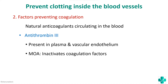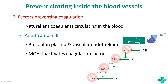Antithrombin-3 is present in plasma as well as the vascular endothelium. Its mechanism of action is that it inactivates many coagulation factors. In the intrinsic pathway, factor 12 gets activated to 12a, 11 to 11a, 9 to 9a, and 10 to 10a — antithrombin-3 inactivates all these coagulation factors, so coagulation will not take place.